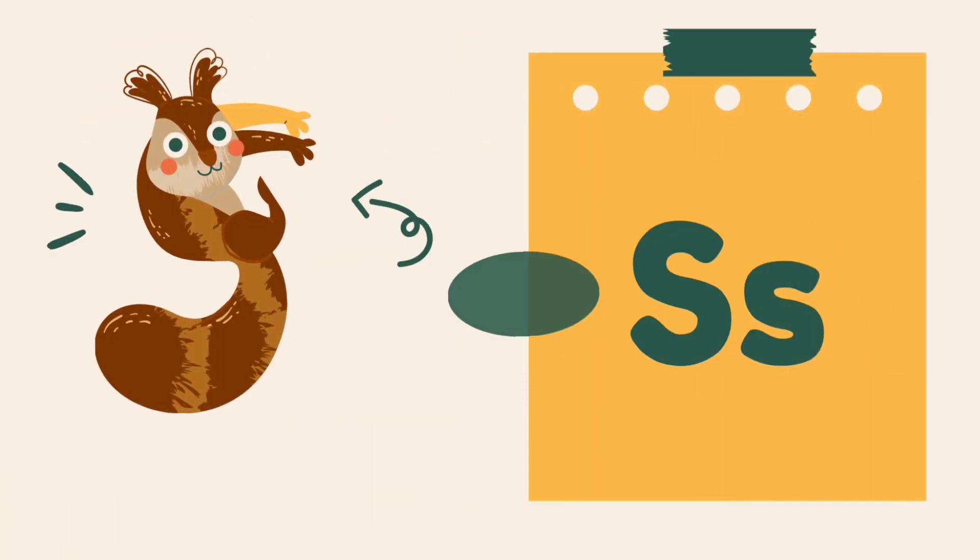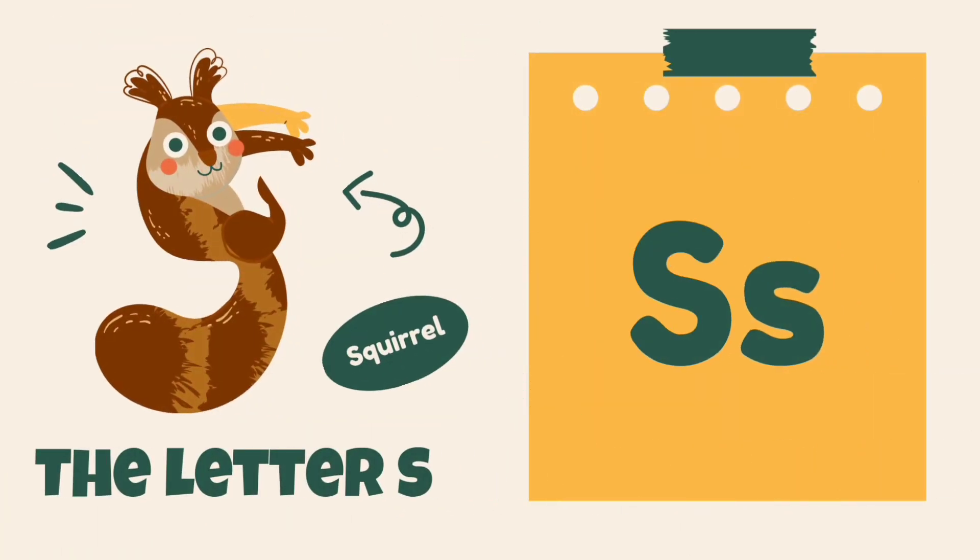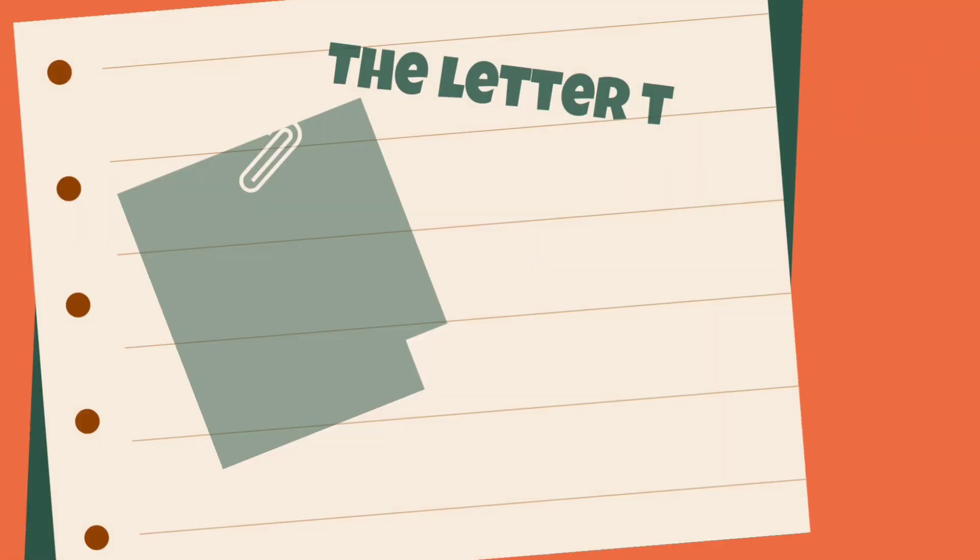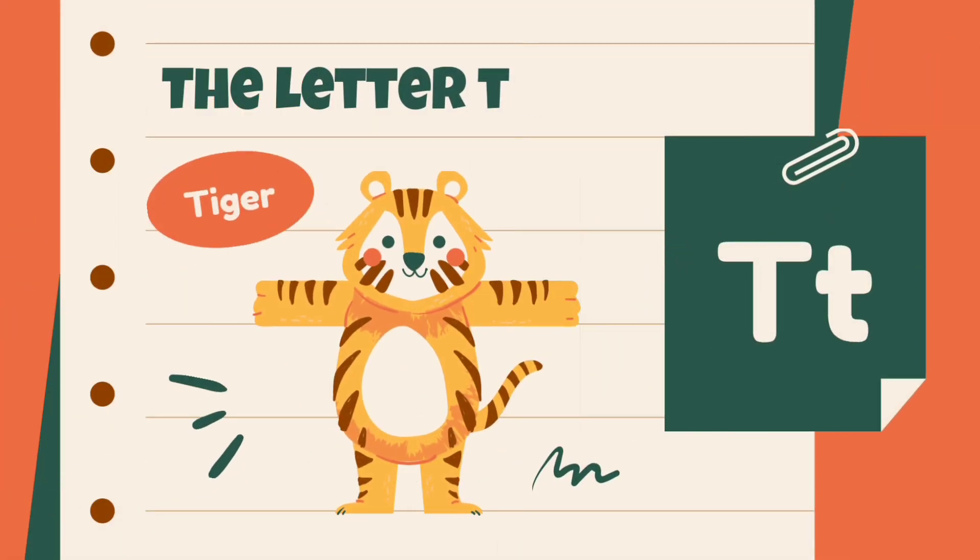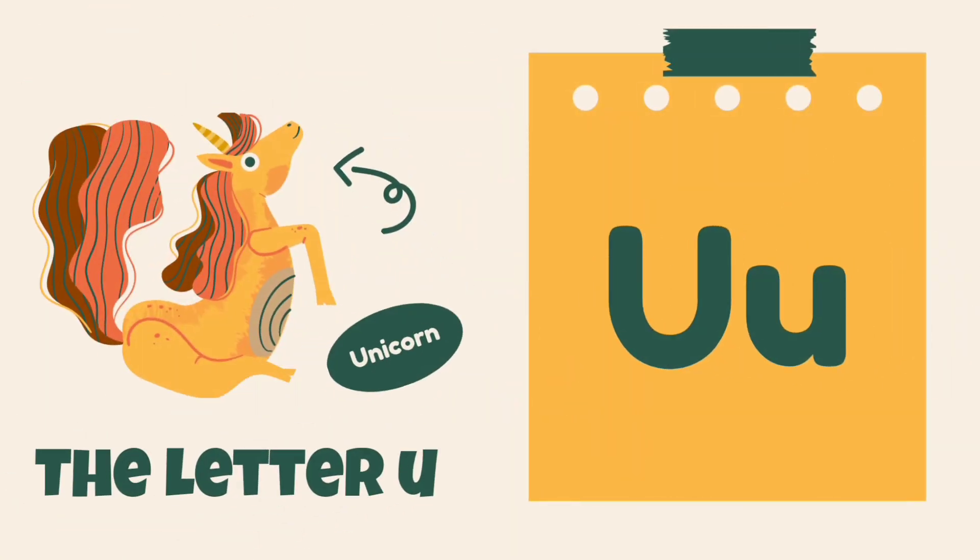S is for squirrel, squirrel. T is for tiger, tiger. U is for unicorn, unicorn.